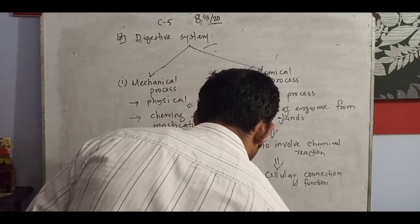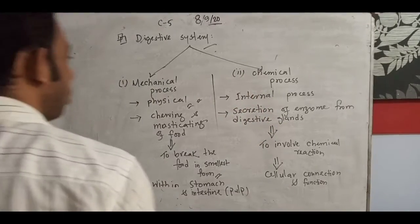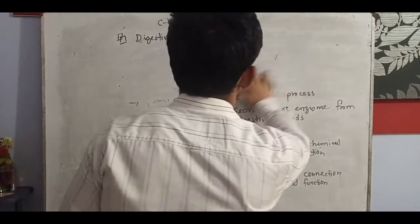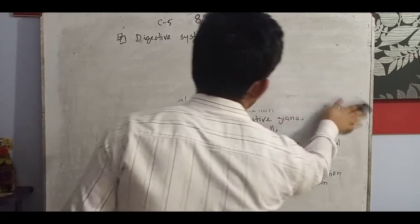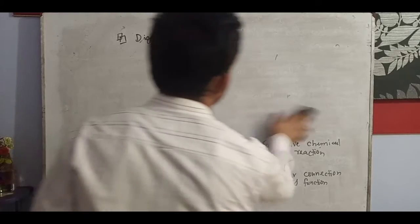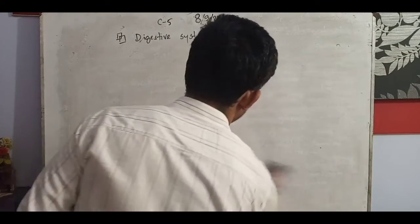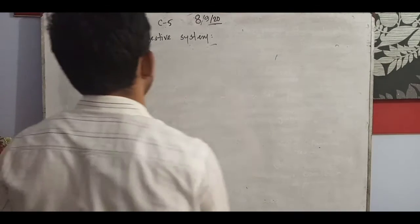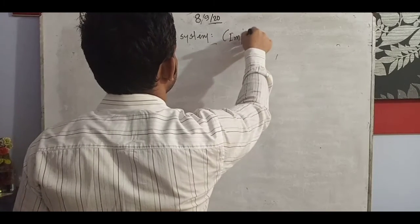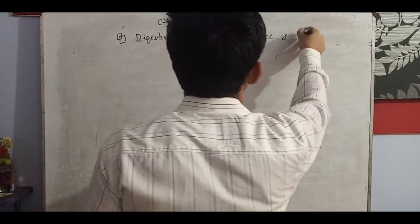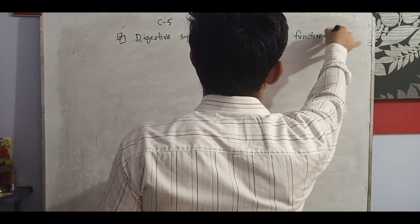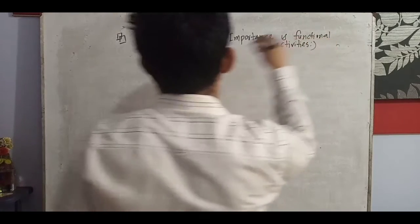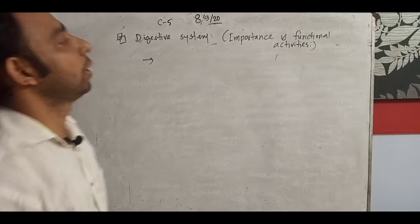Today we will try to cover important things about the digestive system, including the alimentary system. The details will be discussed in the next class. For now, I will write some importance and functional activities of the digestive system — the easiest ones which we already know.